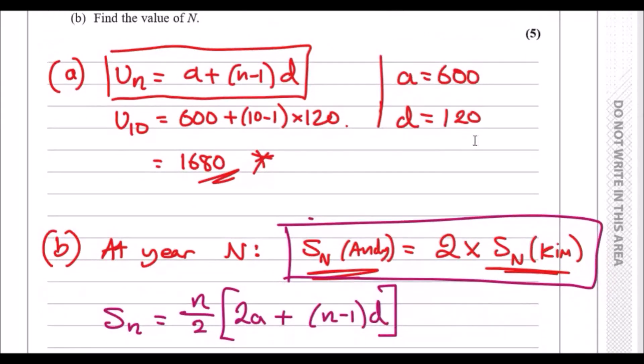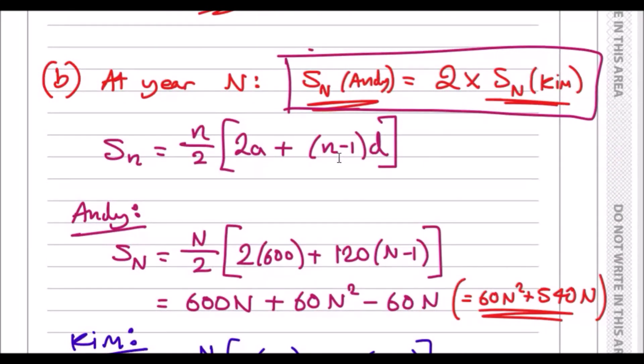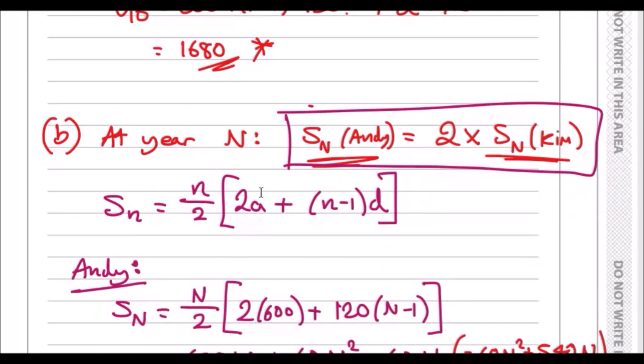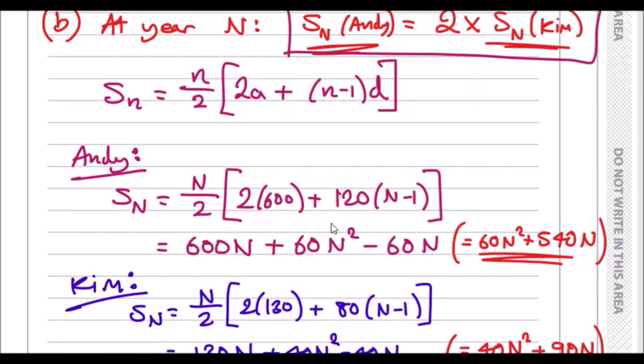So this is pretty much our equation we work with. So all you do here is literally just find the sum formula, the SN formula for Andy and SN formula for Kim, plug into this formula and solve for N. So let's do it. So we got all the variables for Andy, we got A is 600 and D is 120. So the general sum expression, and by the way, I believe it's given in the formula sheet anyway, but I recommend you memorize this. So plug in value for A and D, so you get 600 here and 120 there. Then you just expand. So N over two times two times 600, cancel the twos and you've got 600N and N over two times 120, 120 over two is 60, which will give us 60N squared and 60N and then collect like terms, which will give us 540N and of course plus 60N squared.